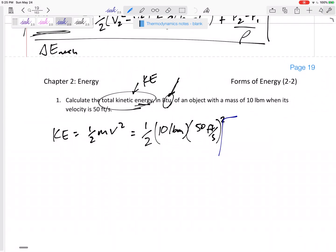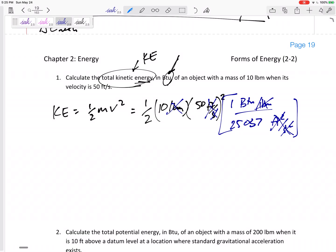I want to keep BTUs so I have one BTU per pound mass is equivalent to 25,037 feet squared per second squared. That feet squared per second squared cancels out nicely and then pound mass, pound mass - yeah I'm left with BTUs. So I took one half times 10 times 50 squared, don't forget the square, and divided by 25,037 and I got the total kinetic energy 0.499 BTUs.